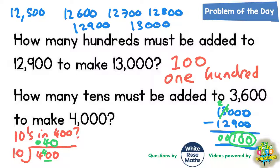40 tens make 400 and that's what we need to add on to 3,600 to make 4,000. So how many tens must be added to make 4,000? The answer is 40.